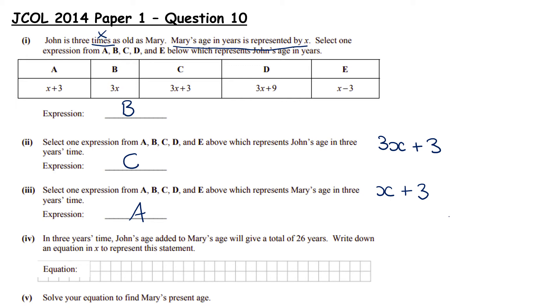In 3 years time, John's age added to Mary's age will give a total of 26. Write down an equation in x to represent this statement. So in 3 years time, we're working with these two expressions. John's age, which we worked out is 3x plus 3. So John's age added, so plus, to Mary's age. Mary's age in 3 years, which is x plus 3, will give a total of, will equal, 26. So that's our equation. We can tidy that up by adding like terms. So we have a 3x plus an x, we have a 3 plus a 3. So this simplifies to 4x plus 6 equals 26.